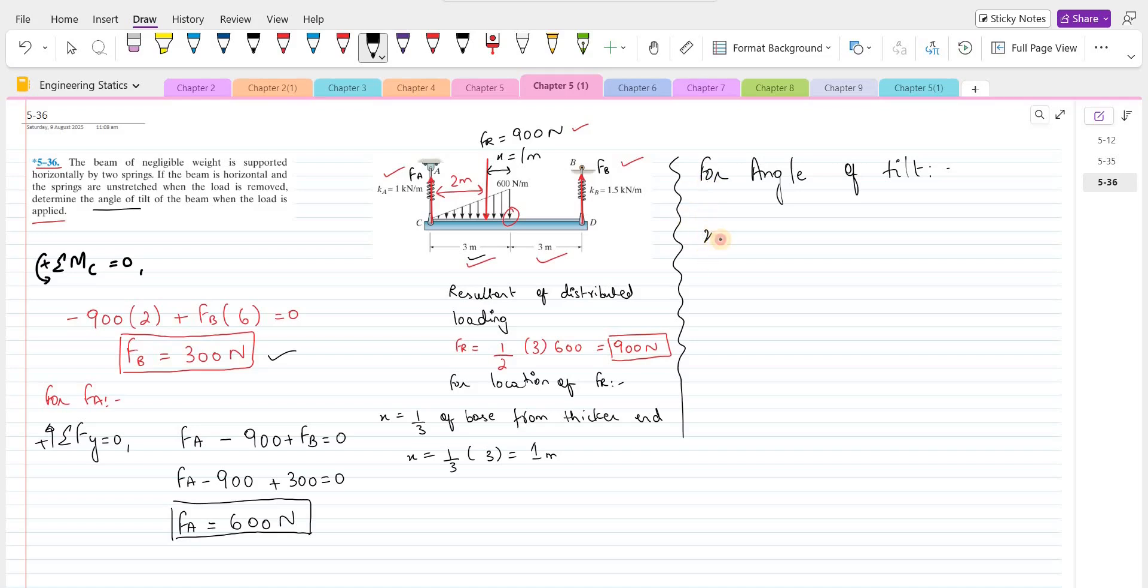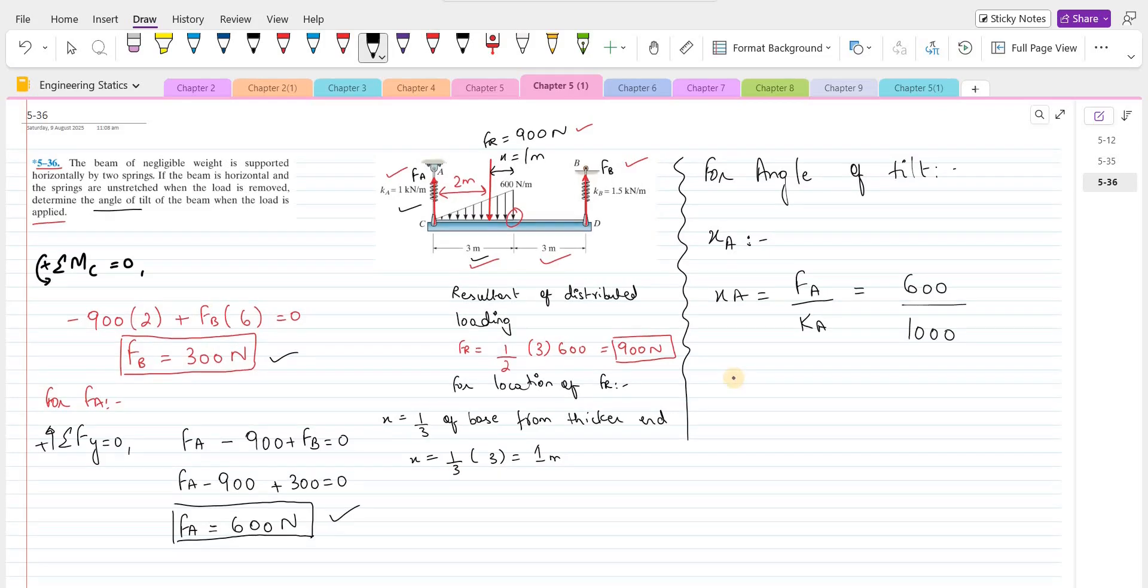So for the change in length in the spring A, we can use the Hooke's law. So it's F A over stiffness constant. So F A is 600 over stiffness Ka which is 1 kilonewtons per meter. So the change in length in spring A comes out to be 0.6 meters.